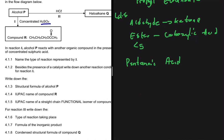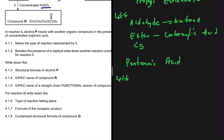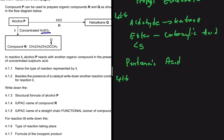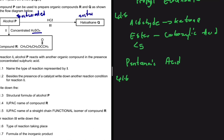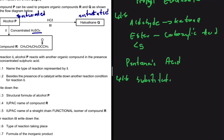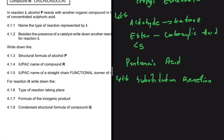Moving to reaction 2, question 4.1.6 asks for the type of reaction taking place. In reaction 2, we have an alcohol — which is saturated — and our product is another saturated compound, a haloalkane. Going from a saturated compound to another saturated compound is always a substitution reaction. So reaction 2 is a substitution reaction.